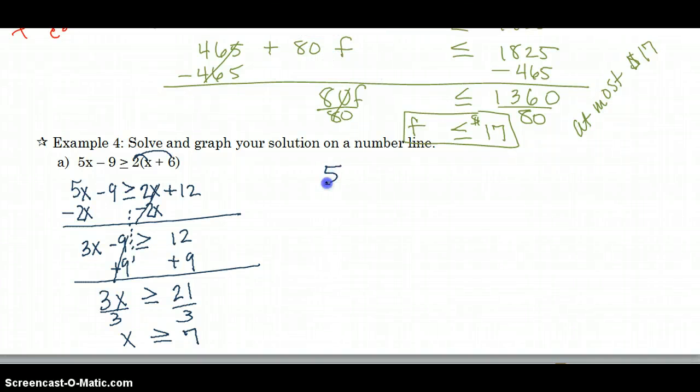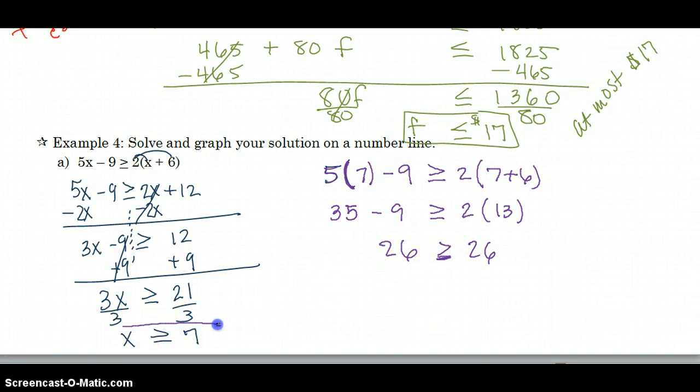And I'm going to plug in 5 times 7 minus 9 should be greater than or equal to 2 times 7 plus 6. So 5 times 7 is 35 minus 9 should be greater than or equal to 2 times 13. So that's going to give me 26. And 35 minus 9 gives me 26. How about that? They turned out to be equal to, and that is an option. It can be greater than or equal to. So 7 shows that it was equal to.